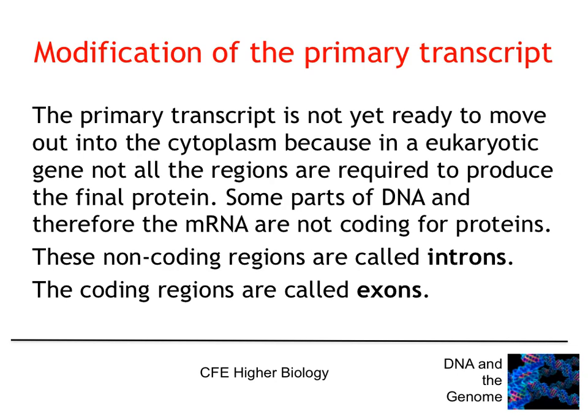We've got this primary transcript, which is a copy of that section of DNA involved in coding for the protein. But the primary transcript isn't yet ready to move out into the cytoplasm, because in a eukaryotic gene, not all regions of the original DNA molecule are required to produce the final protein. Some parts of the DNA — and therefore some parts of the messenger RNA — are not actually coding for proteins. These non-coding regions are called introns, and the areas that do code for the protein are called exons.